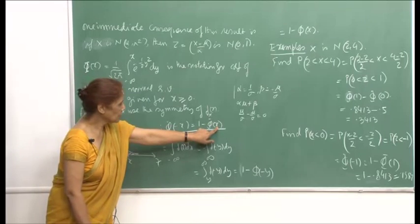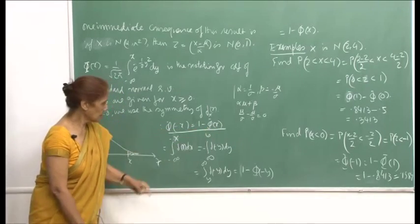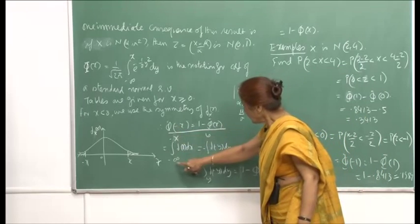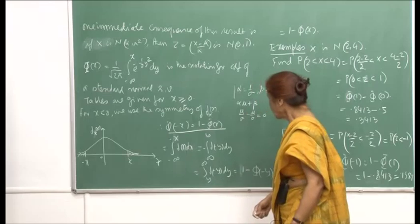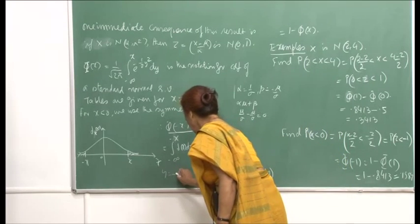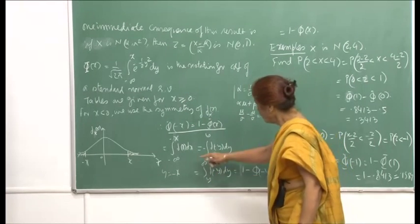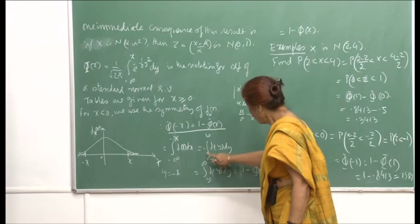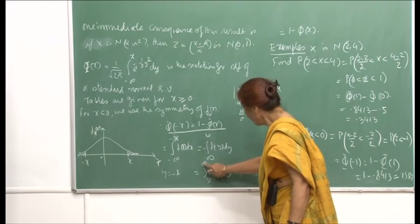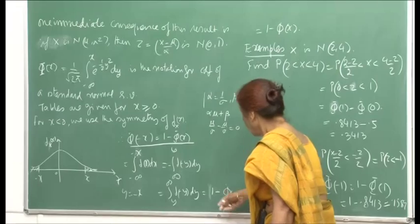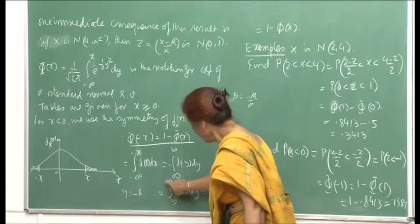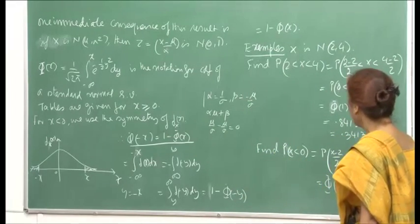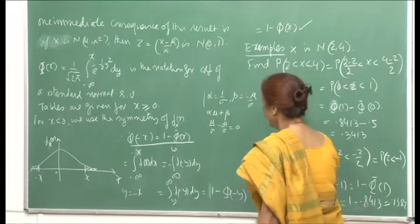We can verify this formula: Φ(−x) = ∫ from minus infinity to −x of f(x)dx. If you write y = −x, then x becomes −y, and the limits go from infinity to y, giving f(−y) dy with a minus sign. If you interchange the limits, this becomes ∫ from y to infinity of f(−y)dy. By symmetry of the standard normal, f(−y) = f(y), so this is 1 − Φ(x). So this formula has been verified.